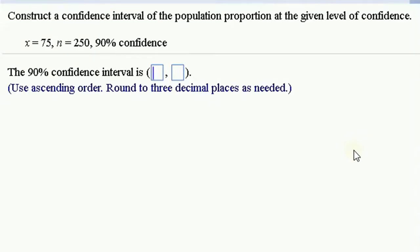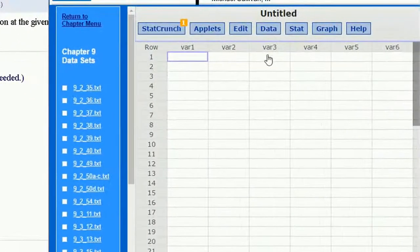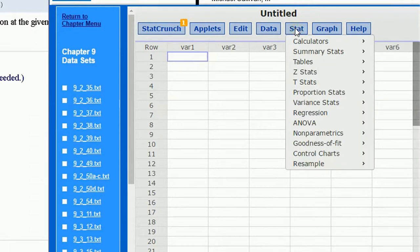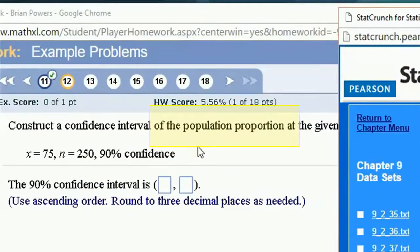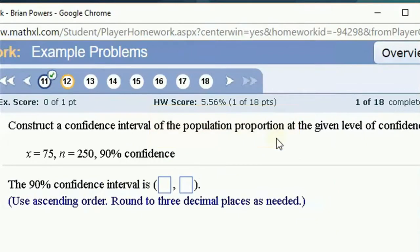Constructing a confidence interval is very easy in StatCrunch, as most of these tasks are. To create a confidence interval, go to the Stat menu. If we're doing a proportion population confidence interval...